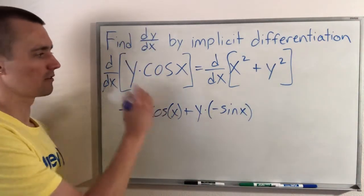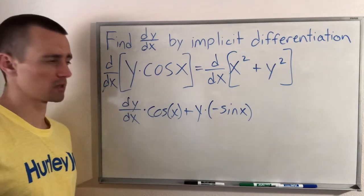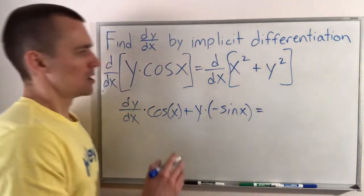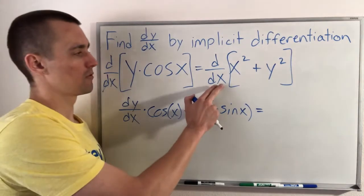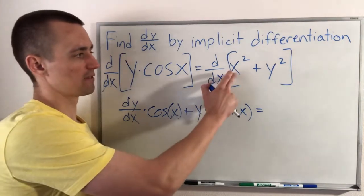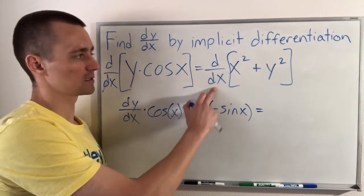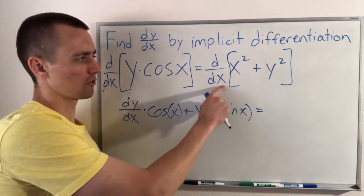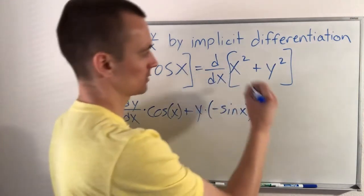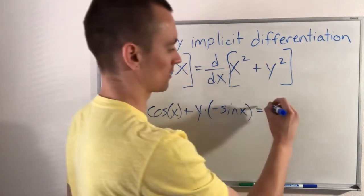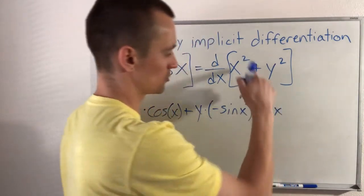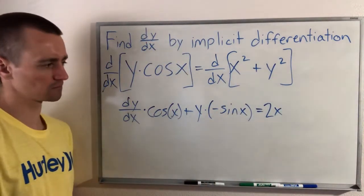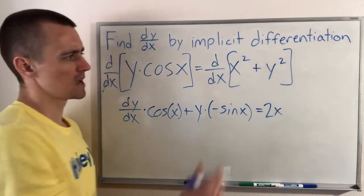This is our full derivative of the left side of our equation using the product rule. Now on the right side, first of all, the derivative of x squared with respect to x is pretty straightforward. Since x is our variable, we can just use the power rule here. So bring the 2 down in front, lower the 2 down to a 1 — x to the first is just x. So that's just going to be 2x.